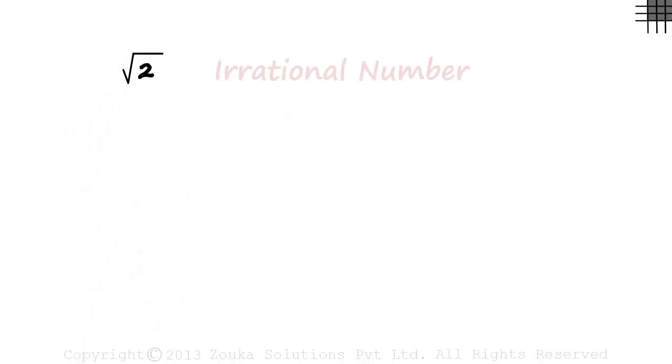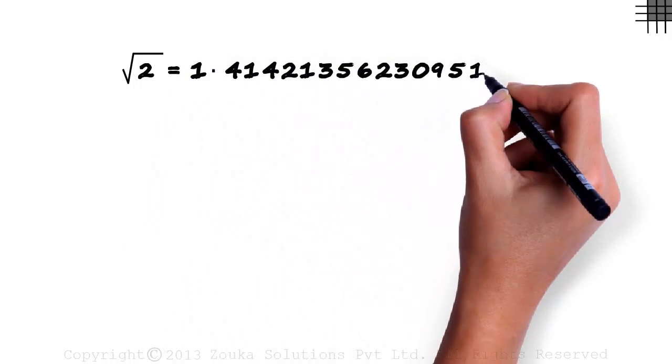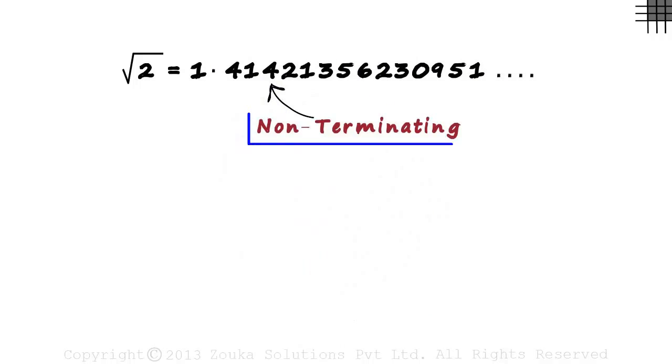Now we know that square root of 2 is an irrational number. If you use a calculator to calculate the value of root 2, you will get something like 1.4142135 and so on. This value that you get is actually non-terminating. It is never-ending.